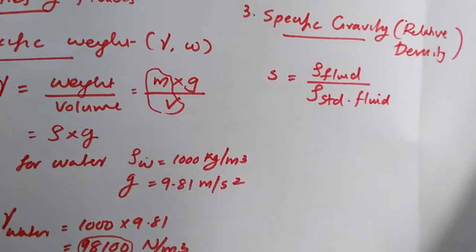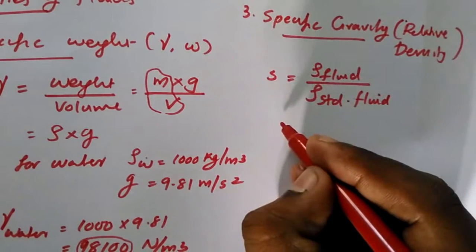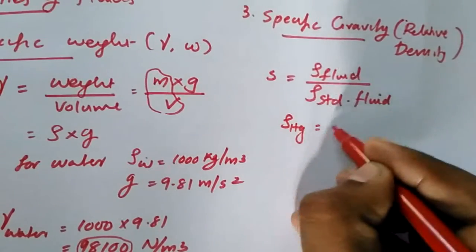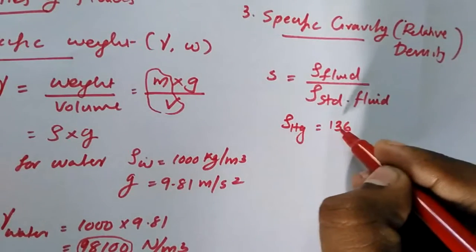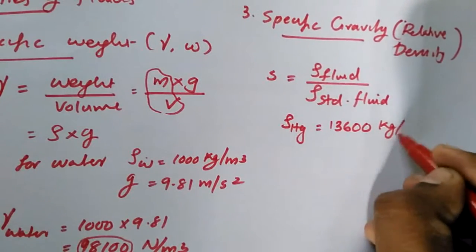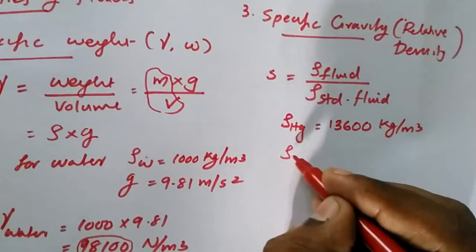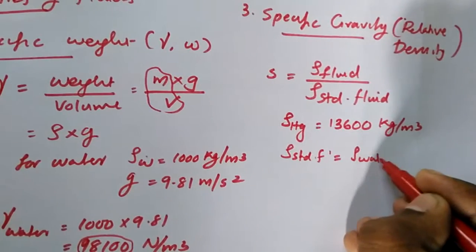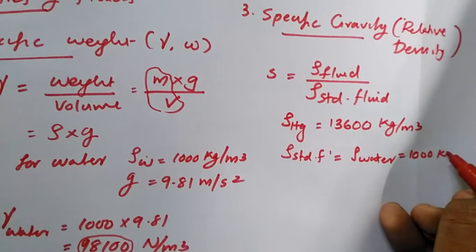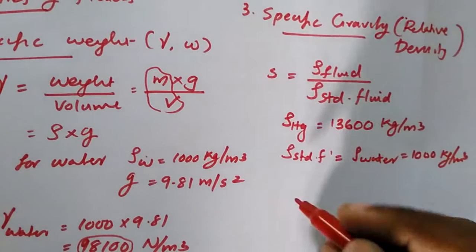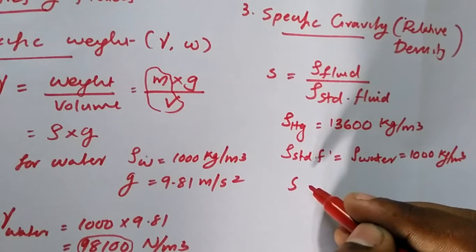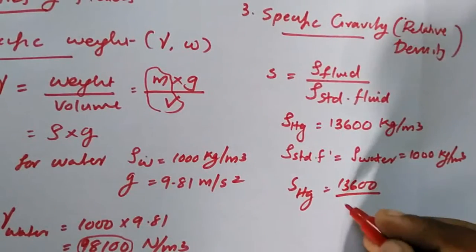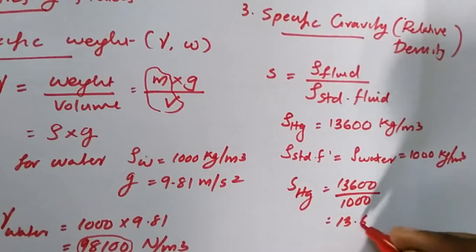The standard fluid that we are normally considering is water, and the density of water is thousand. So for example, for mercury, the density of mercury is 13600 kg per meter cube. So the specific gravity or relative density of mercury is 13600 divided by 1000, that is 13.6.